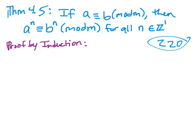All natural numbers are positive integers. We've talked about this before but we haven't actually proved it. If you do know that two numbers are congruent with a certain mod, then the powers of those numbers will also be congruent, as long as we're taking positive powers.